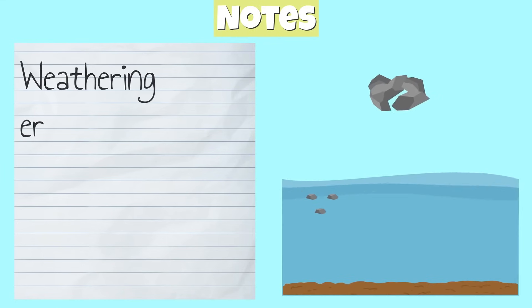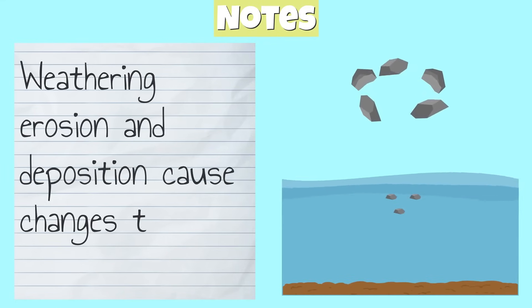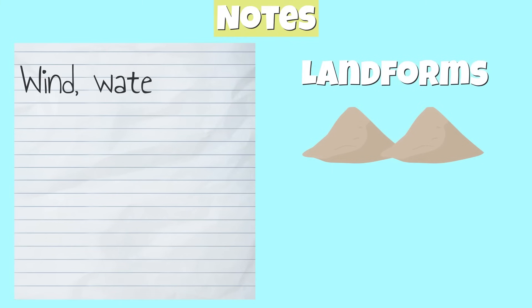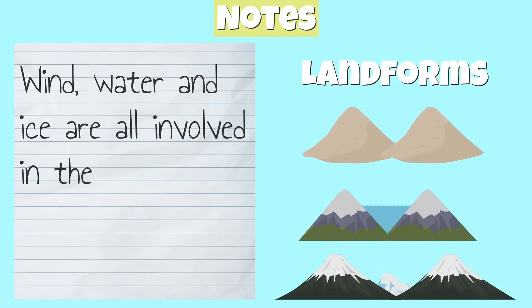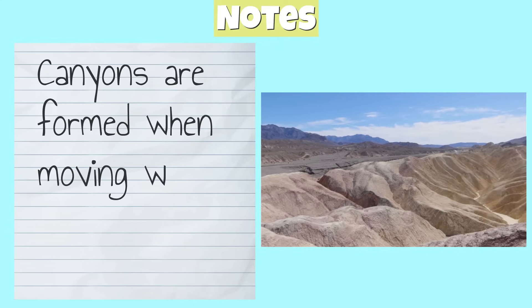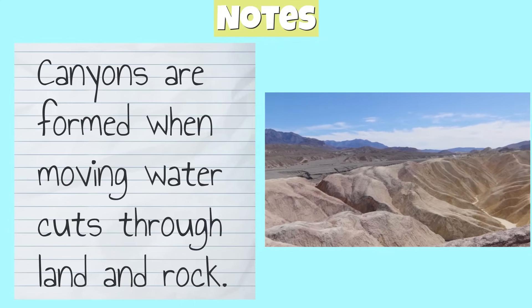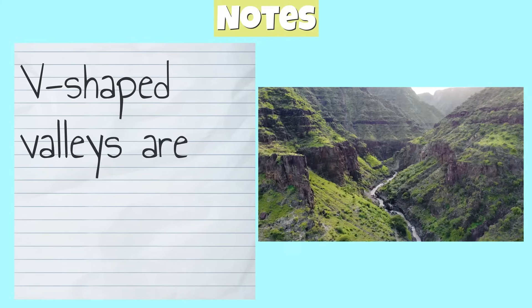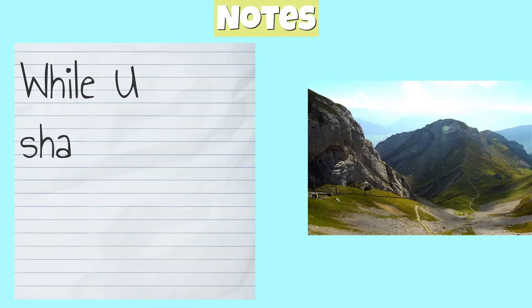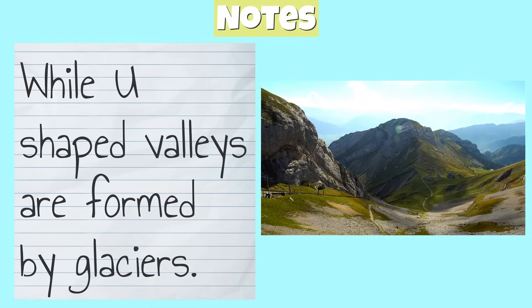Let's review what we learned. Weathering, erosion, and deposition cause changes to the earth's surface. Wind, water, and ice are all involved in the process of weathering and erosion. Canyons are formed when moving water cuts through land and rock. V-shaped valleys are created by moving water, while U-shaped valleys are formed by glaciers.